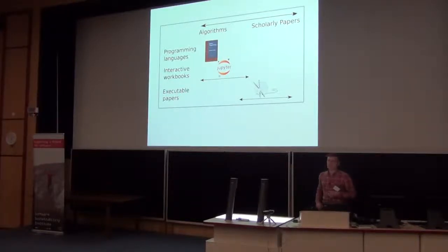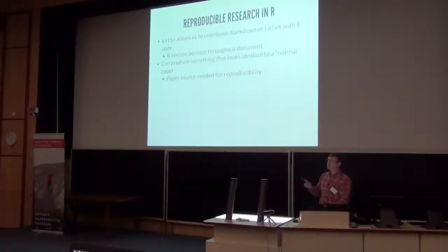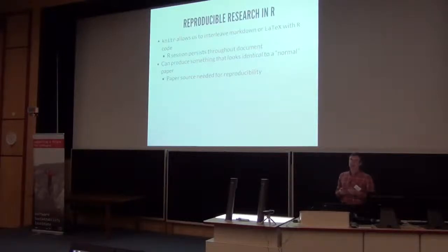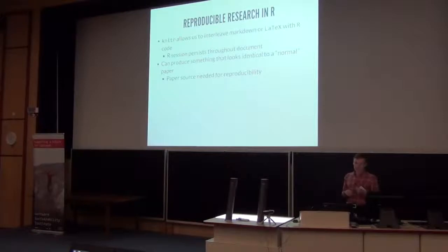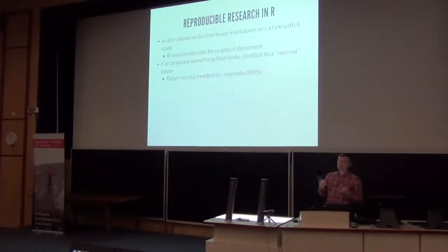If you're looking at using Knitr with R, this can produce something that looks very much like a Jupyter notebook, but you can also use it to make something that looks exactly like a normal scholarly paper with the benefit of reproducibility. Knitr lets you interleave chunks of markdown and LaTeX with R code, and the R sessions persist throughout the document, so you can correctly run your code and your text in parallel.